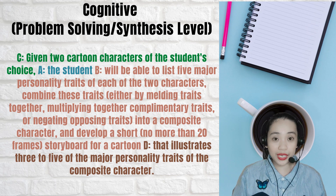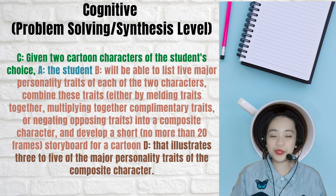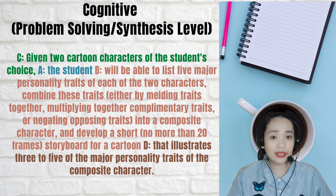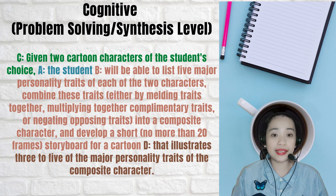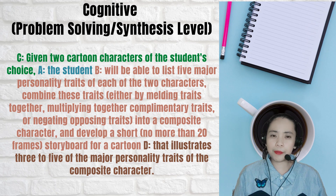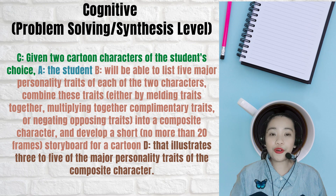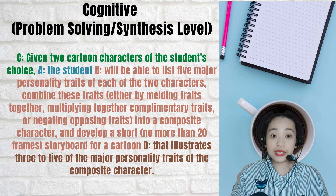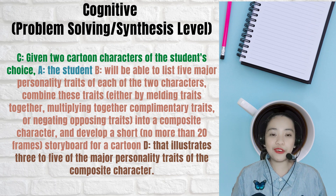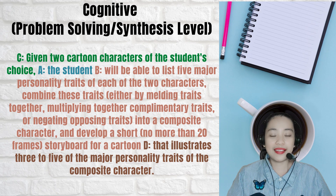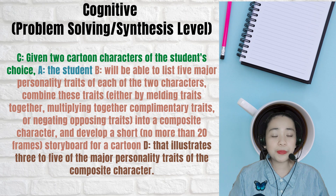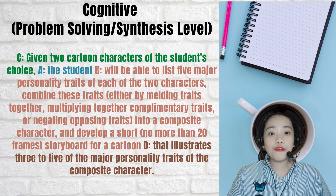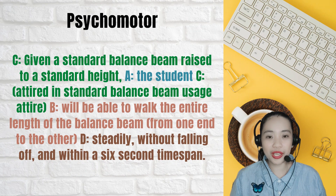Actor: the student; Behavior: will be able to list five major personality traits of each of the two characters, combine these traits — either by melding traits together, multiplying together, or negating opposing traits — into a composite character and develop a short storyboard of no more than 20 frames for a cartoon; Degree: that illustrates three to five of the major personality traits of the composite character.